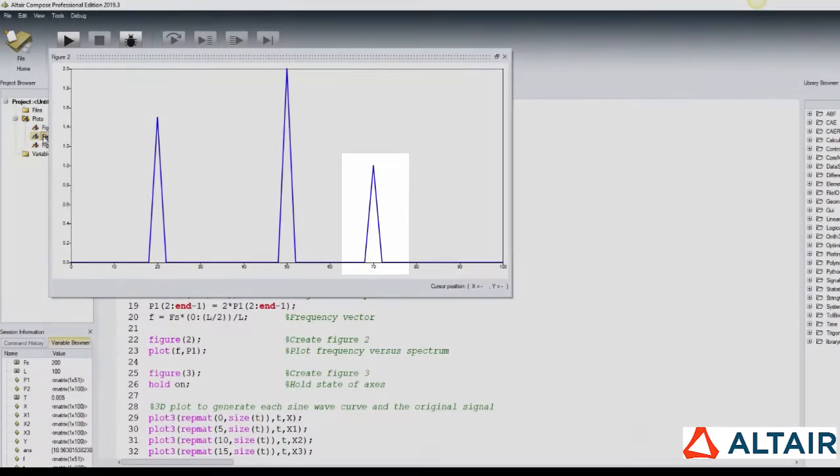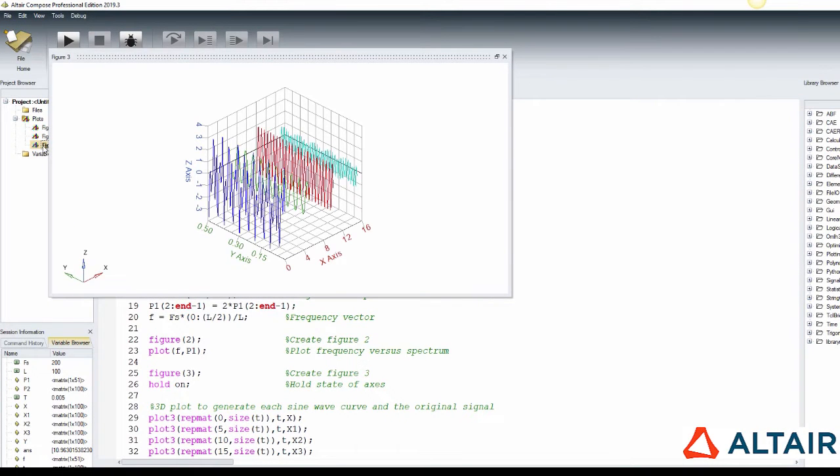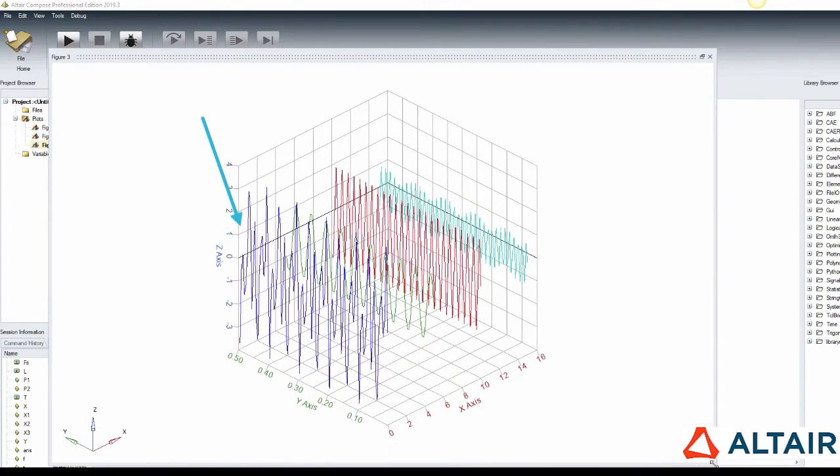The second figure has the frequency domain outcome from FFT function. Now, clicking on the third figure takes us to the visual frequency decomposition of the original signal. The plot confirms that the frequency representation is comprised mainly by three waves of 20 Hz, 50 Hz and 70 Hz respectively, with each corresponding amplitude.